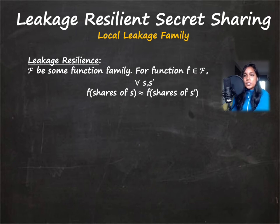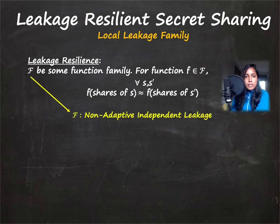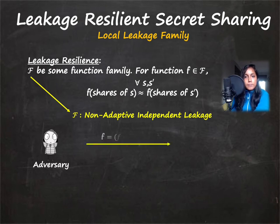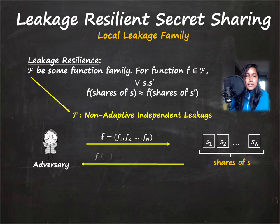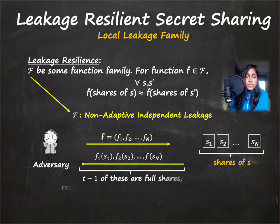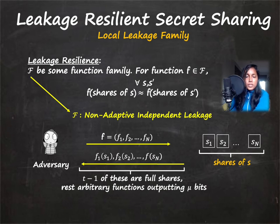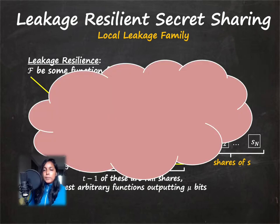One of the most studied families since its introduction is the local leakage family, one of the weaker leakage families. The function family F we consider is a non-adaptive and independent leakage class, meaning the adversary sends a function F consisting of N separate functions F1 through FN in one shot, non-adaptively. The response he gets is essentially Fi applied to each share Si. So this is independent leakage on every share. Of these N leakage responses, T minus one are full shares, and the remaining output μ bits from the share.